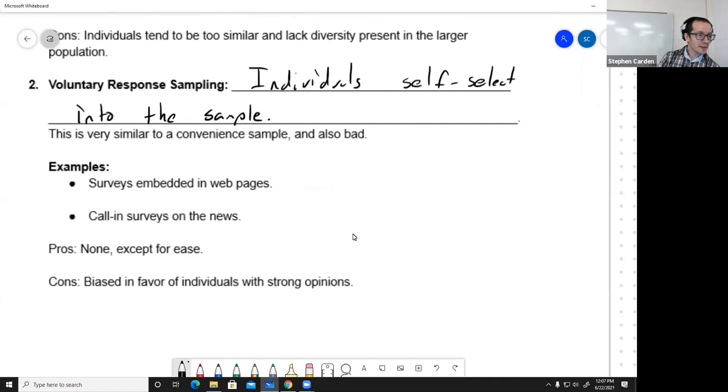A couple examples of this: if you see a survey embedded in a web page, people choose if they're going to participate in that or not. I'd call that a voluntary response sample. Call-in surveys, or tweet your response to a hashtag. Anything like that where they're just saying come participate in this if you want to, that's a voluntary response sample. What's good about this? Nothing. It's easy. That's why people do it.